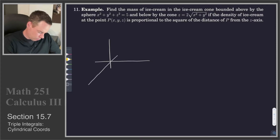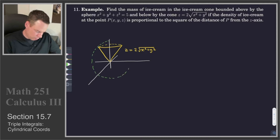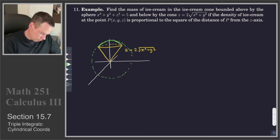We've got this cone given by z equals 2 times the square root of x squared plus y squared, and then we've got this sphere. I'll draw the whole sphere temporarily. We've got this sphere about the origin and we're just interested in the part sitting above the cone, so I'll draw that portion in.